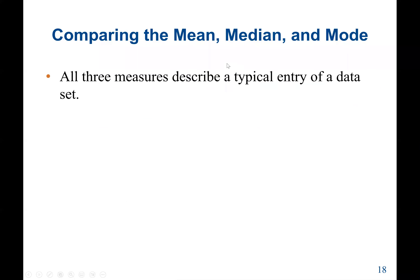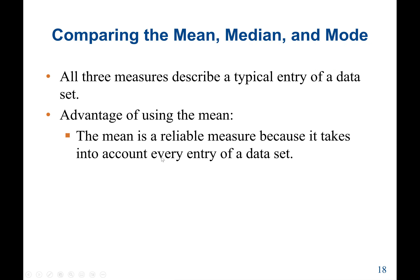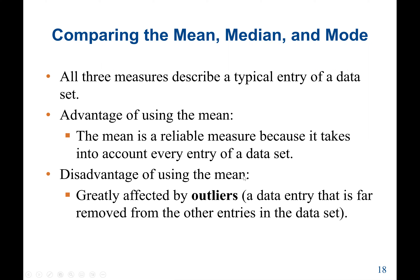Comparing mean, median, and mode: all three measures describe a typical entry of a data set. The advantage of using the mean is that it is a reliable measure because it takes into account every entry of the data set. The disadvantage is that it is greatly affected by outliers — values that are very small or very large compared to the majority of the data — a data entry far removed from other entries in the data set.